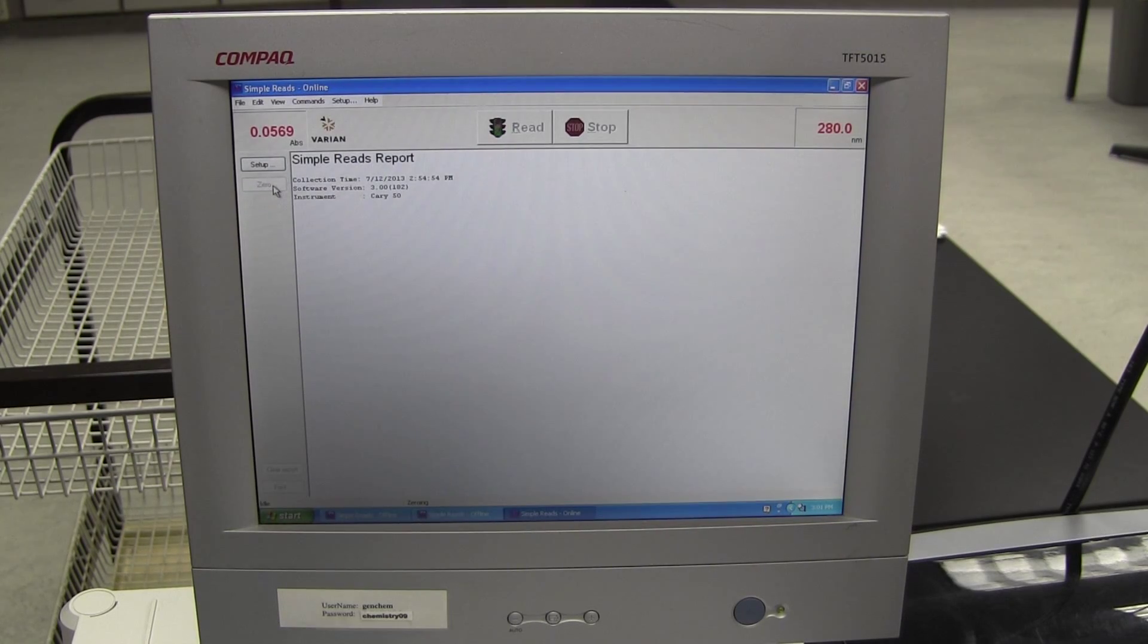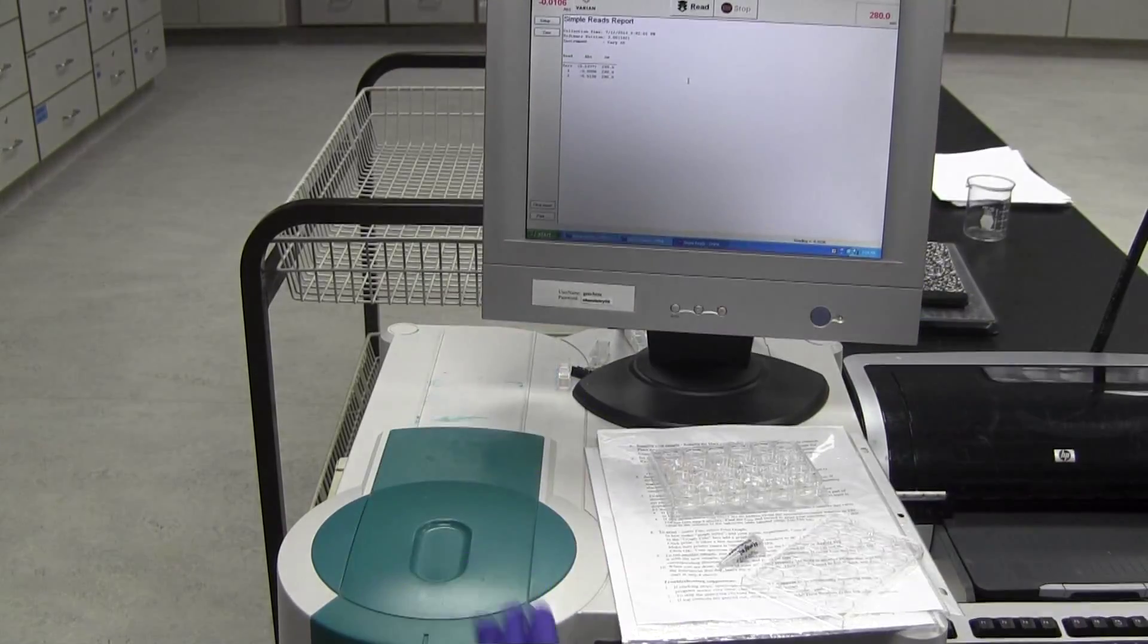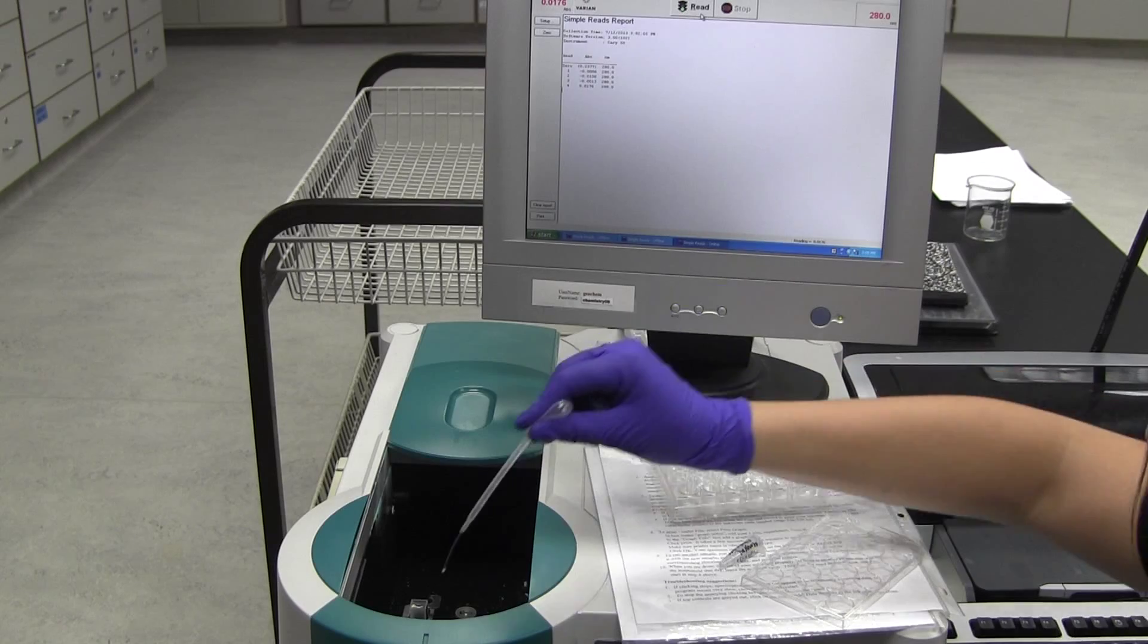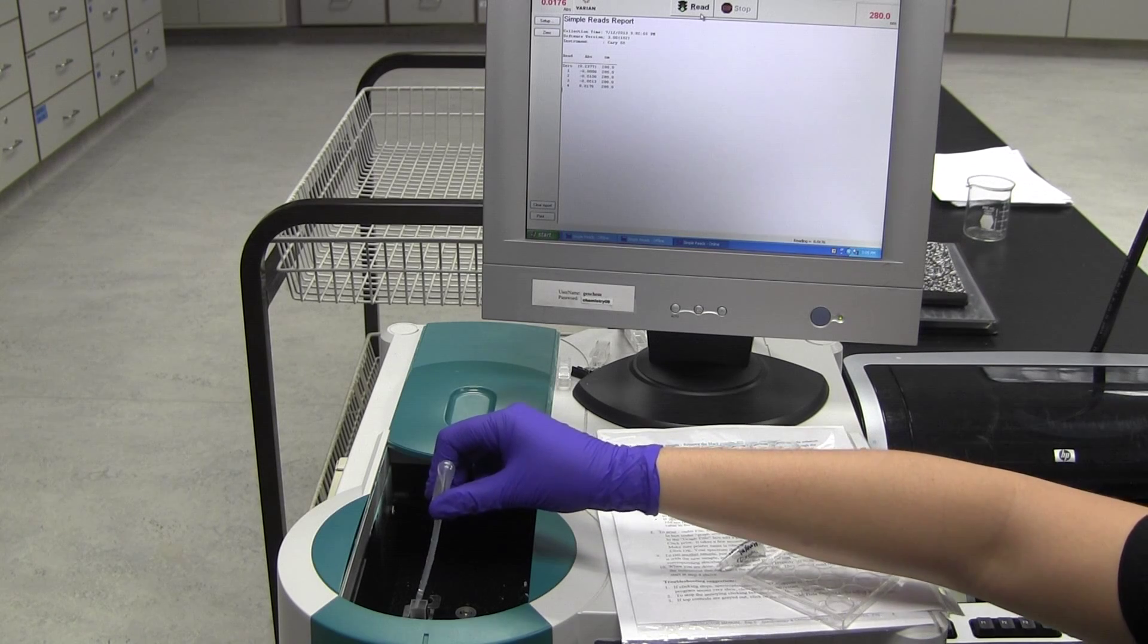Then, you can dump the buffer out into the sink. Load your first fraction into this same cuvette. Close the instrument and click read. Wait for it to finish, then pipette out the fraction into the well where you took it from, and load in the next one.